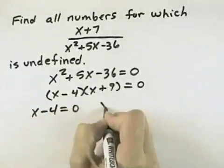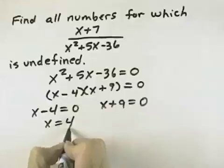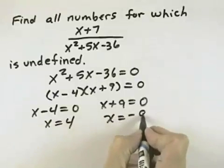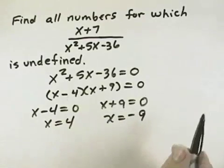So setting each of those equal to zero, we can solve the first one by adding 4 to both sides to get x equals 4. In the second one, we subtract 9 from both sides to get x equals negative 9.